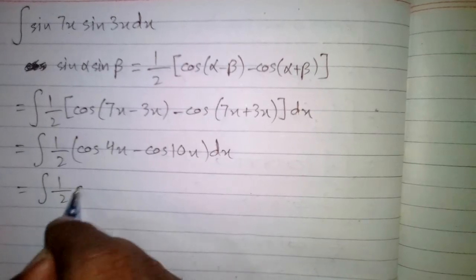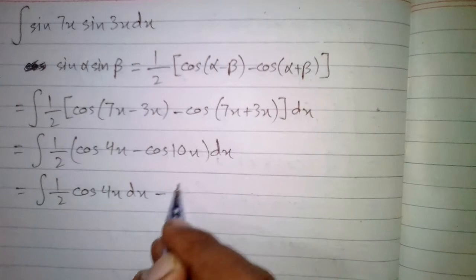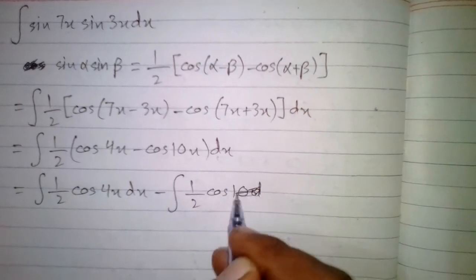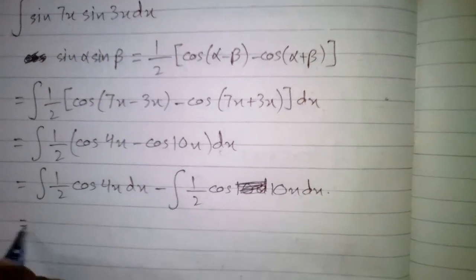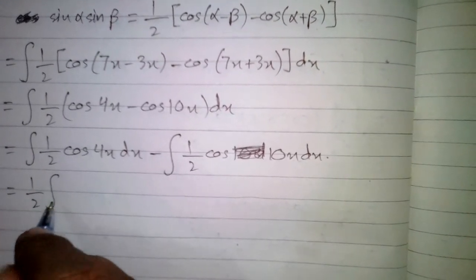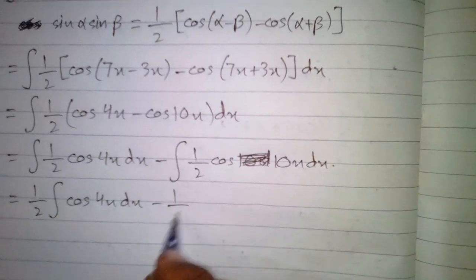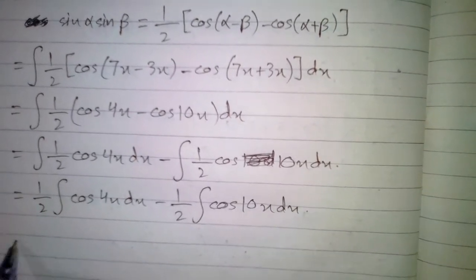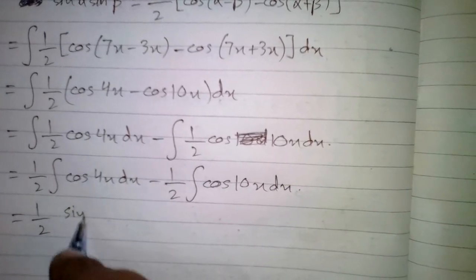Now we will apply the integral to both terms. We have ½ of the integral of cos(4x) dx minus ½ of the integral of cos(10x) dx.